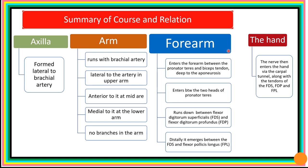In the forearm, the nerve enters by passing between the two heads of pronator teres and is then seen lying between flexor digitorum superficialis above and flexor digitorum profundus below. Distally, before reaching the wrist, it moves away from the cover of flexor digitorum superficialis, shifting laterally to lie between the tendons of flexor carpi radialis laterally and palmaris longus superiorly and medially. In the hand, the nerve enters the carpal tunnel alongside the tendons of flexor digitorum superficialis, flexor digitorum profundus, and flexor pollicis longus.